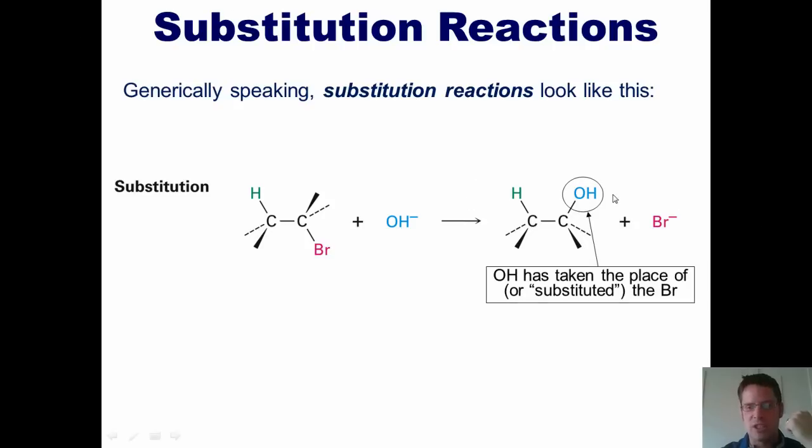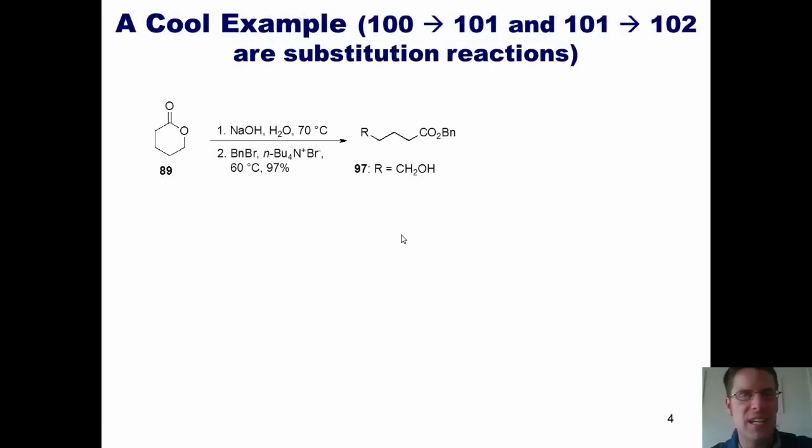In other words, we could say that the OH, the hydroxyl group, has taken the place or substituted itself for the bromine. That's why it's called a substitution reaction. Now, as we'll see over the course of this lecture, there are numerous different groups, not just bromines that can be substituted for, and many different reactants, not just hydroxides, that can do the substituting.